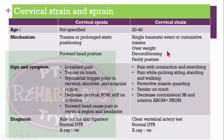Cervical strain mechanism of injury includes a single traumatic event or cumulative trauma; the patient may have overweight, deconditioning, or faulty posture. Signs and symptoms include pain with contraction or stretching, pain during prolonged sitting, standing, or walking, protective muscle guarding, and tenderness. Active range of motion is less than passive range of motion, particularly in rotation. Diagnosis requires ruling out vertebral artery insufficiency with a special test; X-ray will be negative.